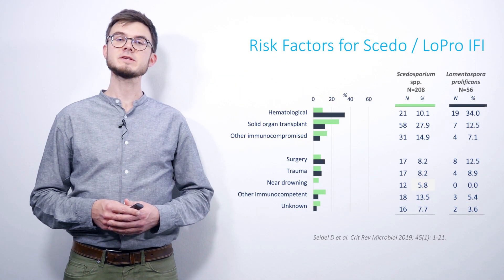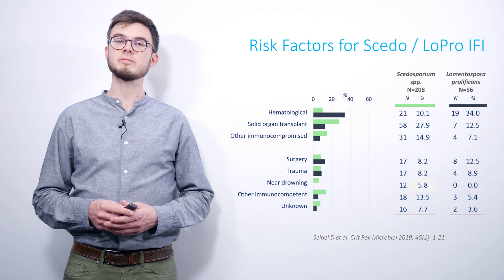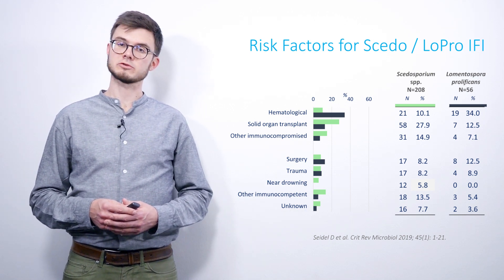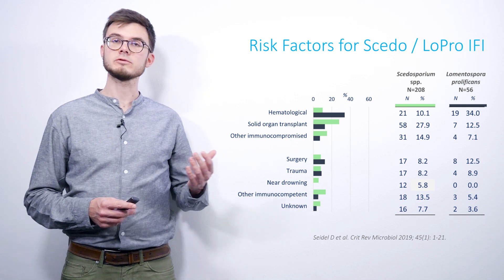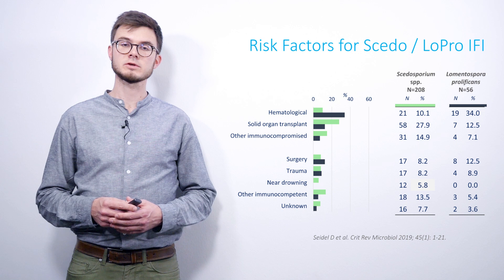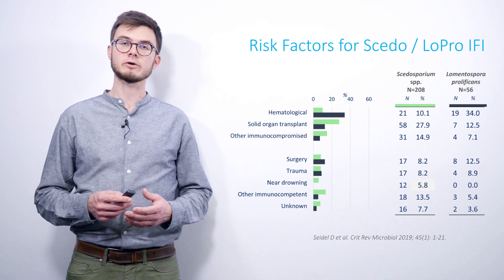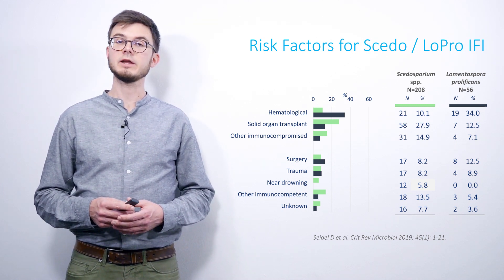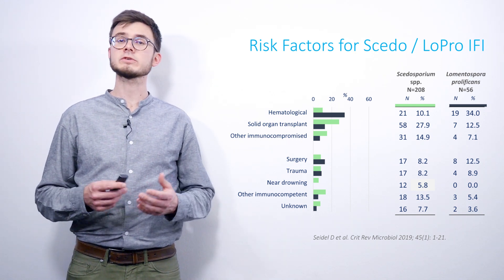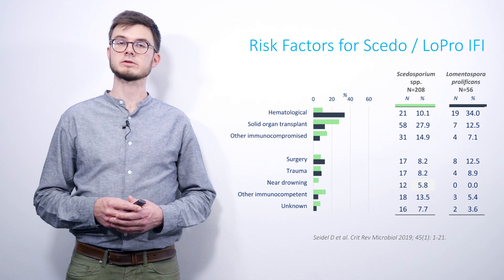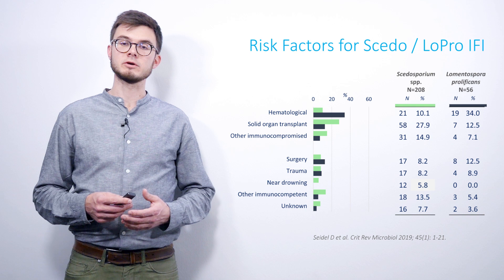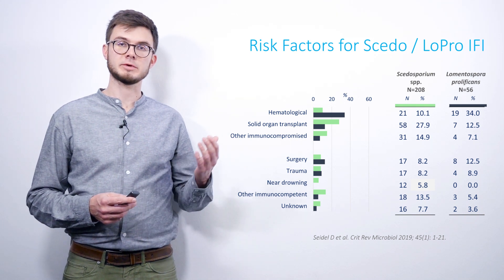Here we see risk factors and underlying conditions of patients with these infections. The green bars stand for scedosporiosis and the dark blue for lomentosporiosis. In patients with scedosporiosis, we observed a predominance of solid organ transplant patients and also near drowning events. The latter is almost an exclusive risk factor for scedosporiosis, whereas Lomentospora appears to be more frequent in hematological patients.